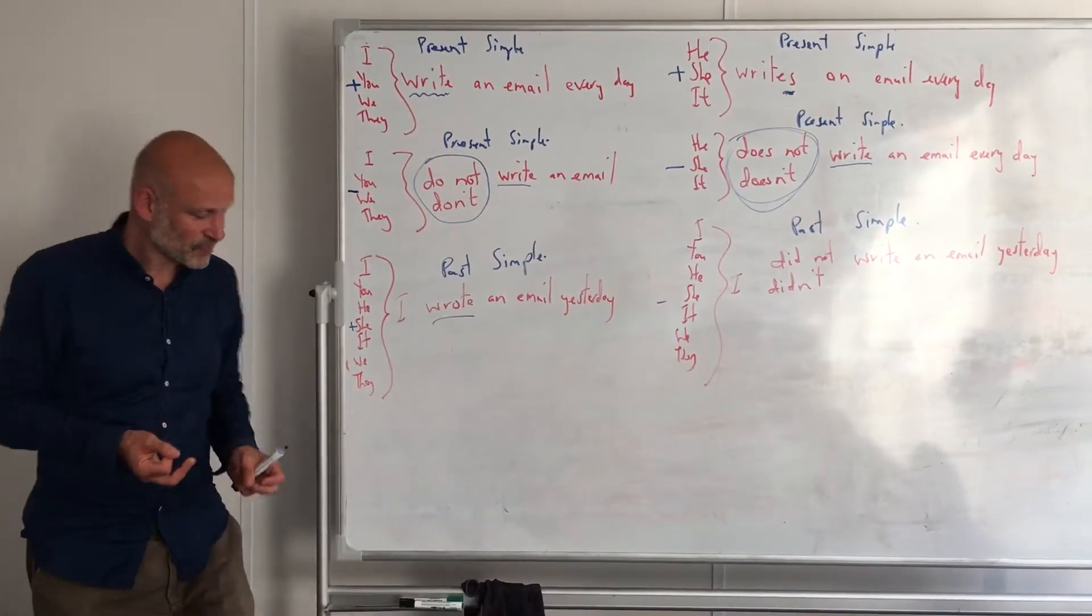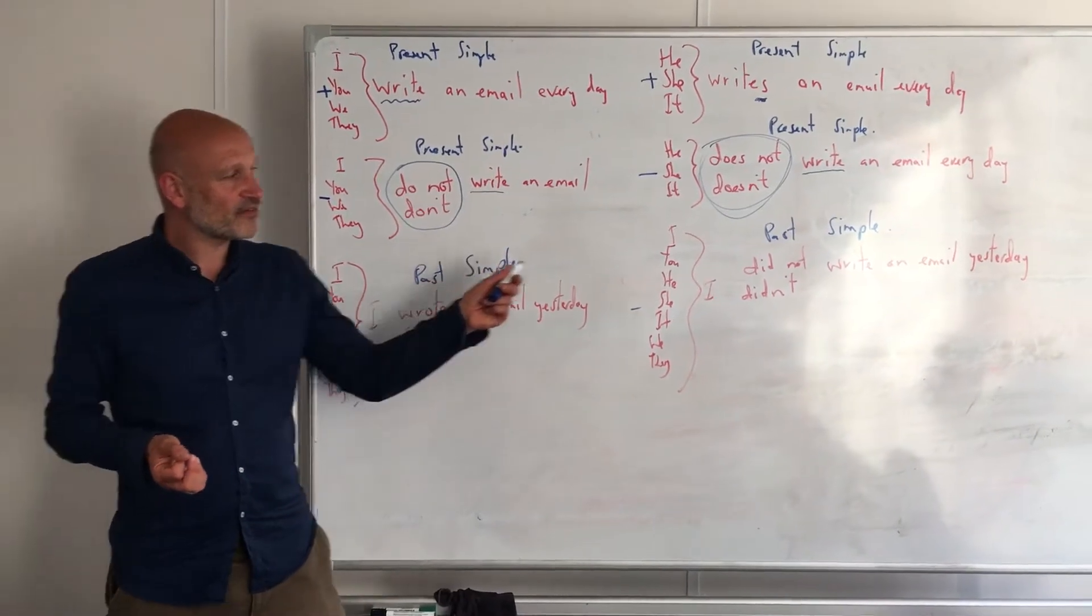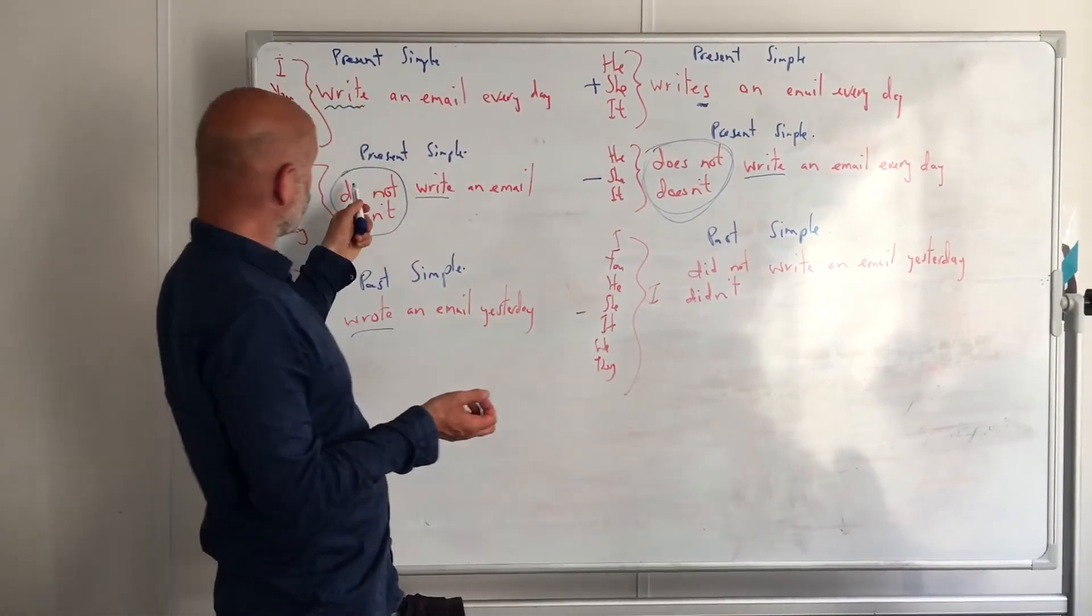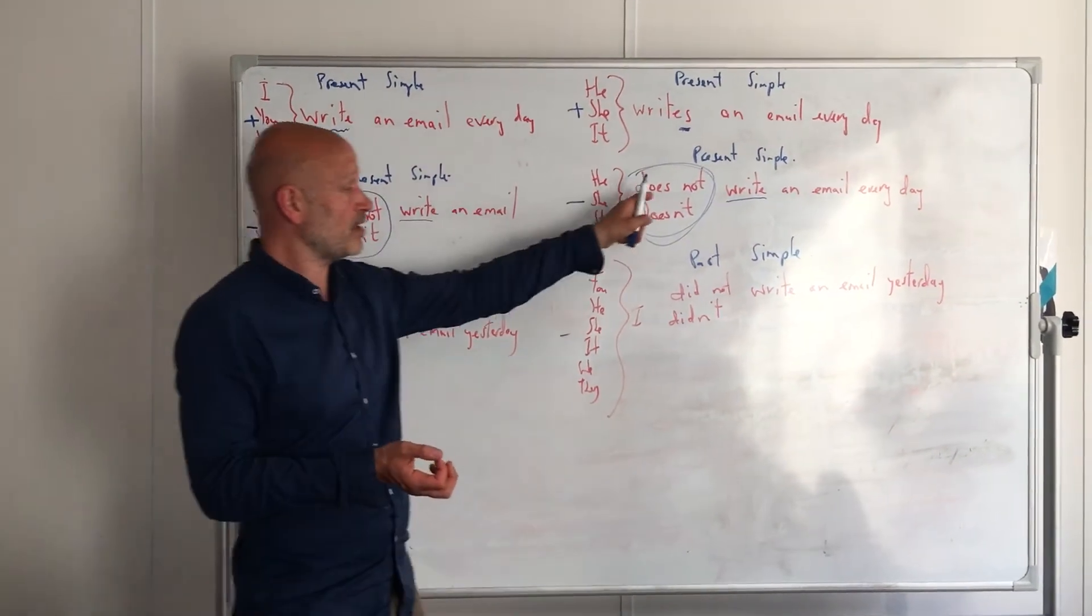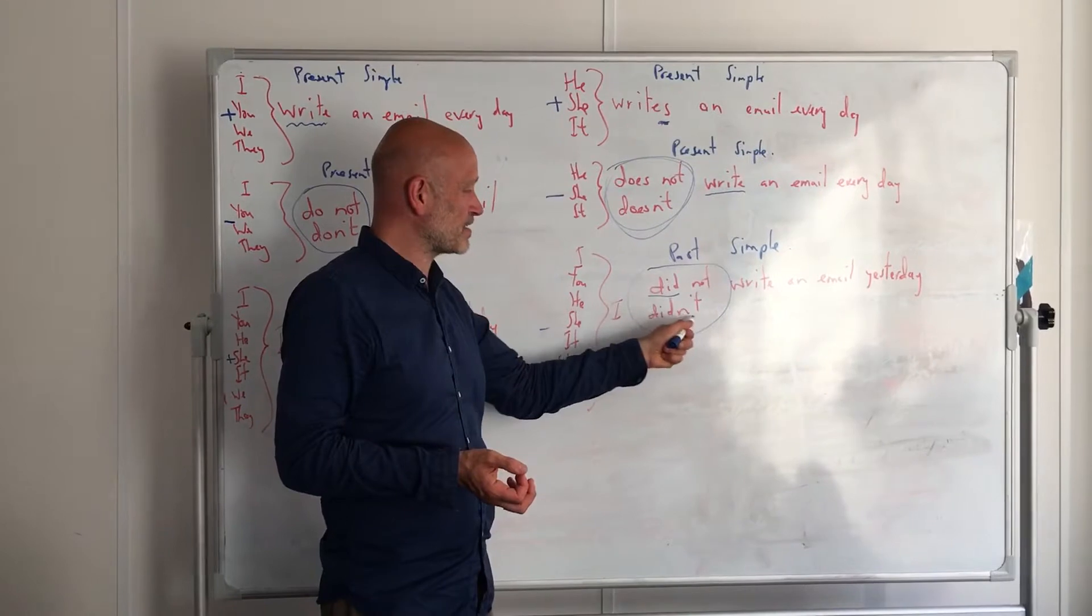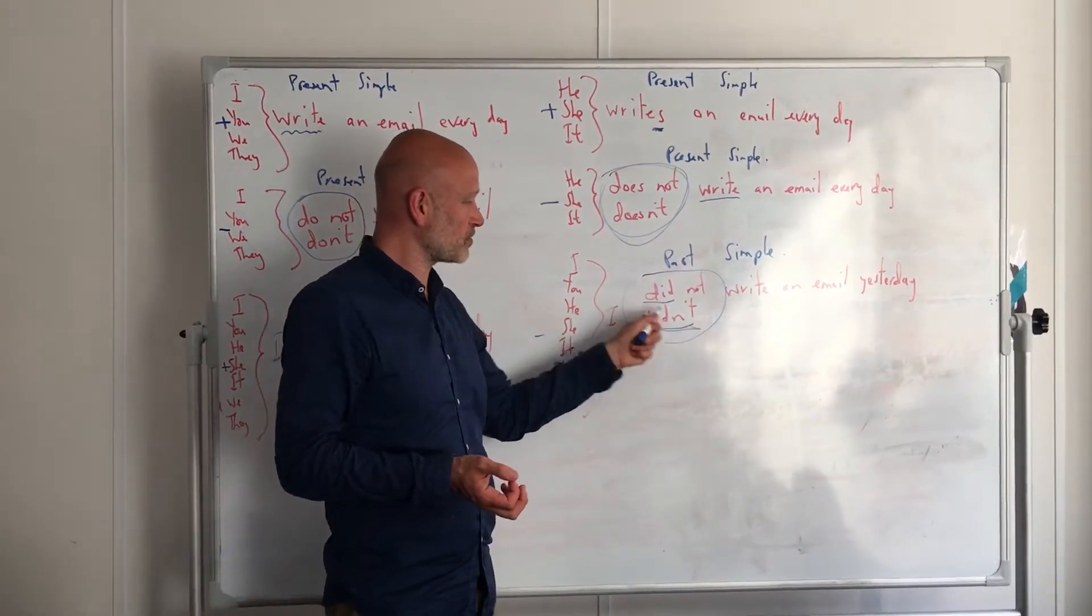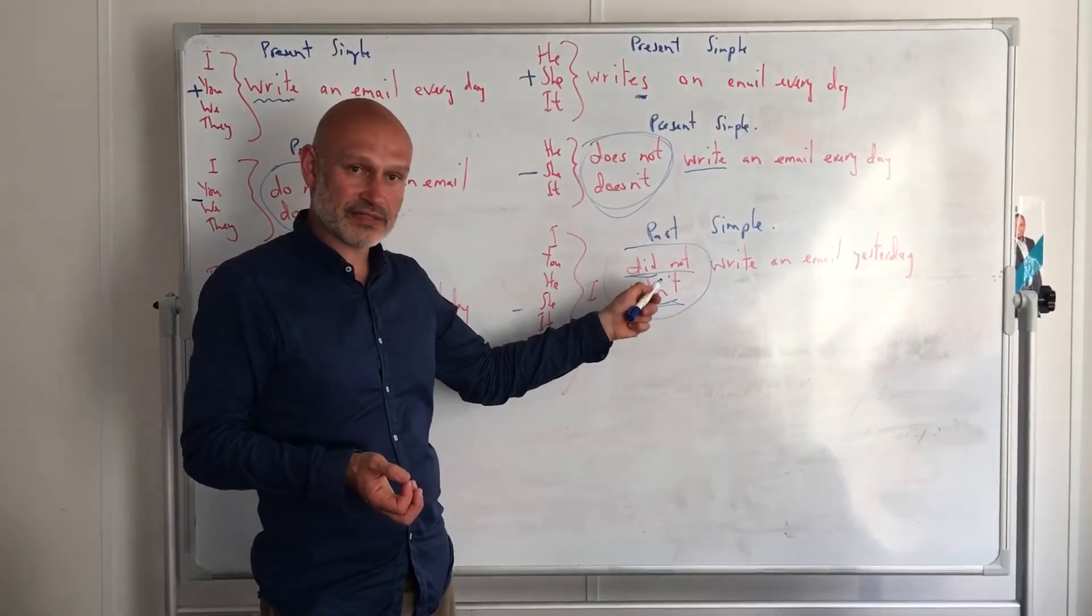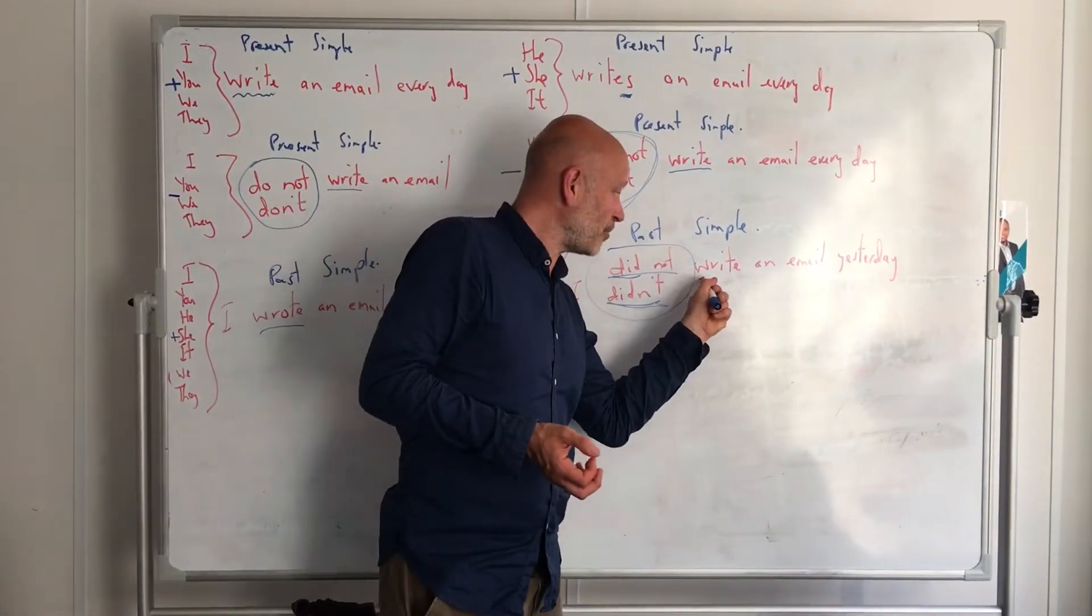In the negative, there's something else to remember. We need to use the auxiliary verb 'do' again, but this time in the past: 'did' or 'did not.' So negative is 'I didn't,' but then the main verb stays present again.